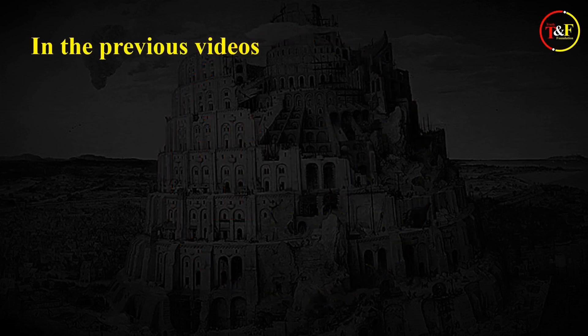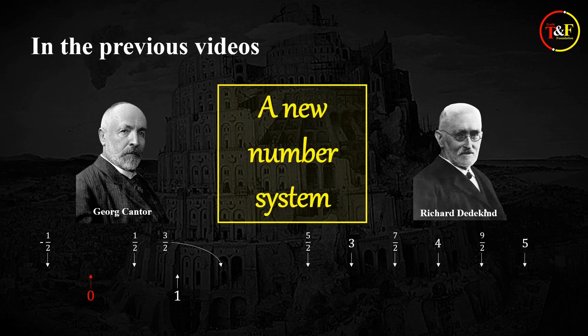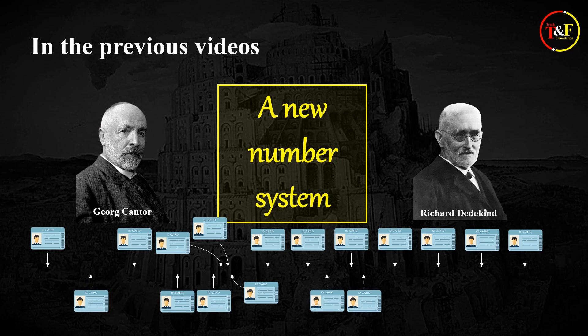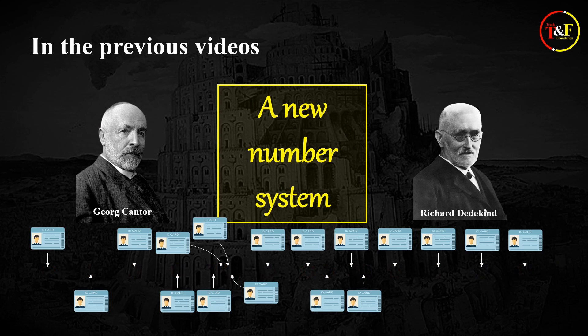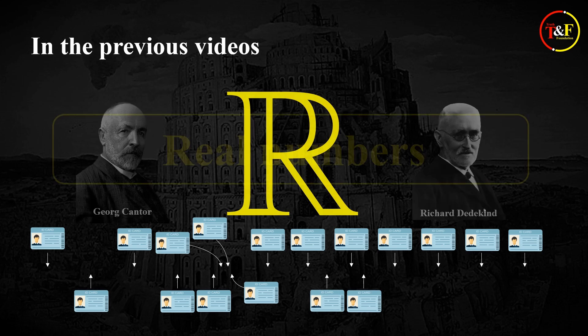Hi everyone! In the previous videos, I explained that in the late 19th century, German mathematicians Cantor and Dedekind defined a new number system consisting of rational and irrational numbers. In this new system, rational and irrational numbers were newly defined or given a new identity in such a way that they together became an arithmetic continuum corresponding to the fantasied geometric continuum. This new system is called the real number system, or the system of real numbers, and the newly defined rational and irrational numbers are called real numbers.